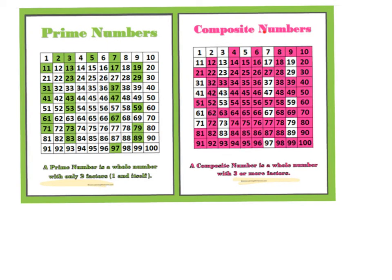A composite number, which is all of these pink ones, is a whole number with three or more factors. So let's look at 6. For example, if I do a factor rainbow of 6, I always start with 1 times 6 is 6. Then I can also say 2 times 3 is 6. So I have 1, 2, 3, 4 factors for 6. All I need is 3 or more, and therefore it is composite.